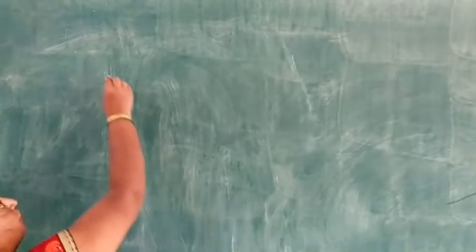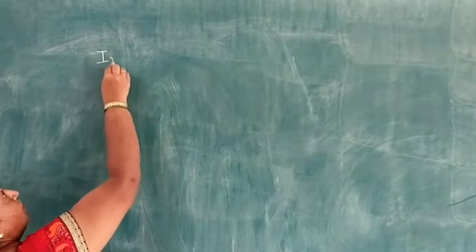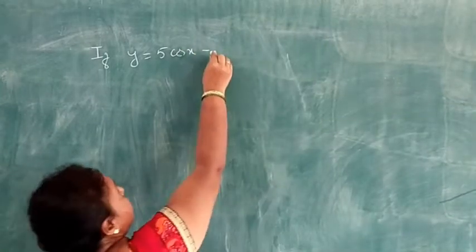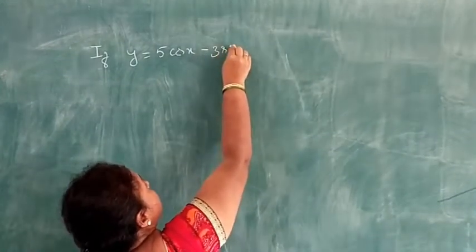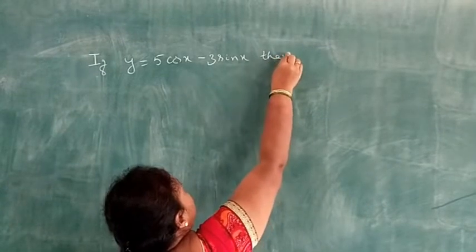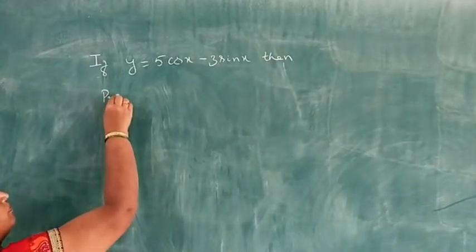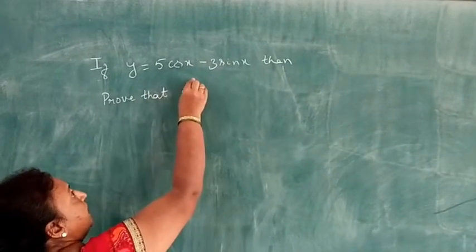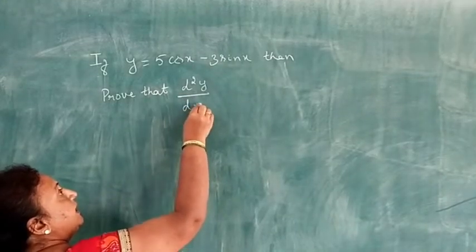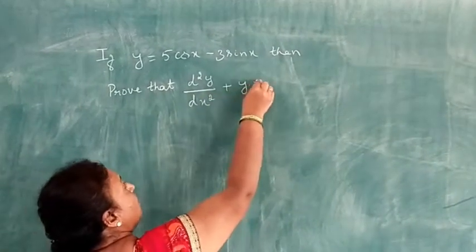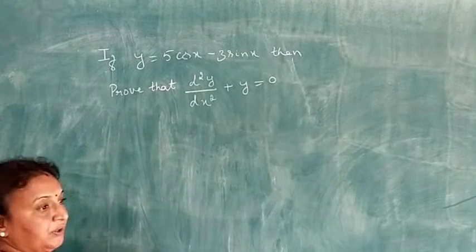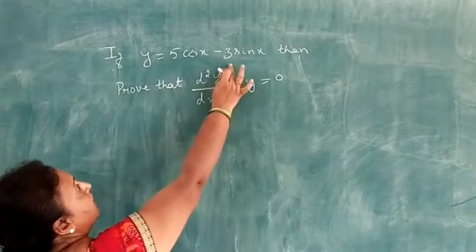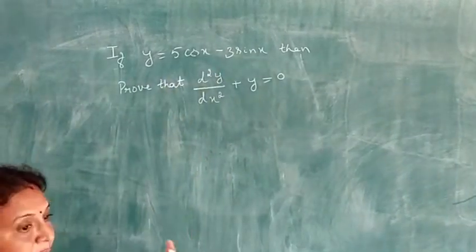Next question: if y equals 5 cos x minus 3 sin x, then prove that d squared y by dx squared plus y equals 0. This is the same type of equation as the previous problem but with constants 5 and 3 instead of a and b.